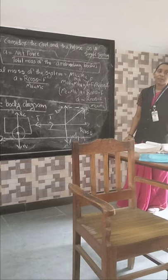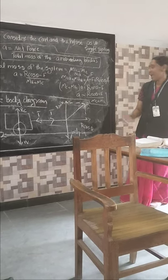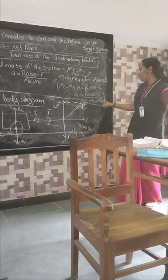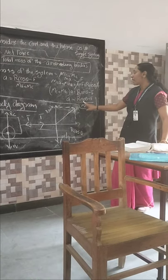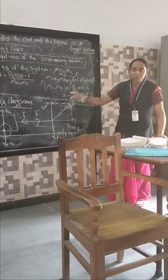What is the meaning? Both are considered in a common system. They have an acceleration equal to R cos theta minus F divided by Mc plus Mh. That means R cos theta minus F is in the forward direction and F is in the downward direction.